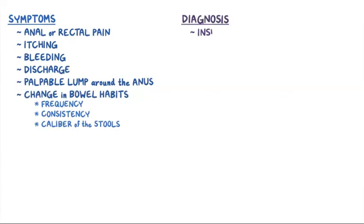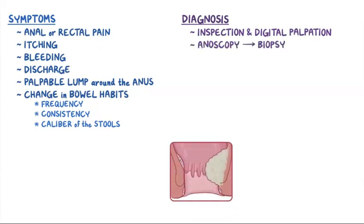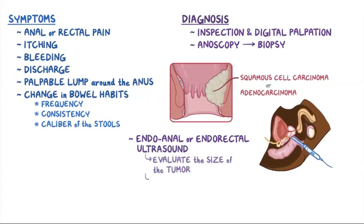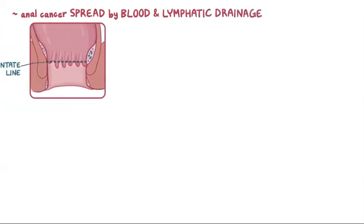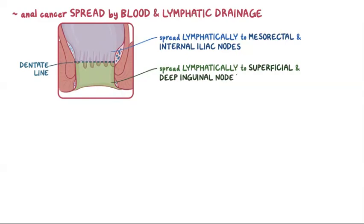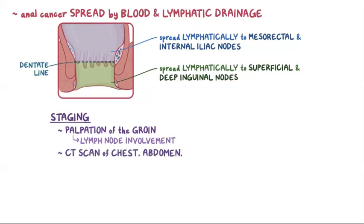The lesion is confirmed with inspection and digital palpation if it's higher in the canal. Anoscopy can be used to get a biopsy. Anal cancers are usually squamous cell carcinomas but can also be adenocarcinomas. Endoanal or endorectal ultrasound is useful to evaluate the size of the tumor and see if it infiltrates the external or internal sphincters. Anal cancers can spread by blood and by lymphatic drainage. Tumors above the dentate line spread lymphatically to the mesorectal and internal iliac nodes, whereas tumors below the dentate line spread to the superficial and deep inguinal nodes. Staging requires palpation of the groin to assess for lymph node involvement, a CT scan of the chest, abdomen, and pelvis, and a PET CT scan to look for distant metastases.